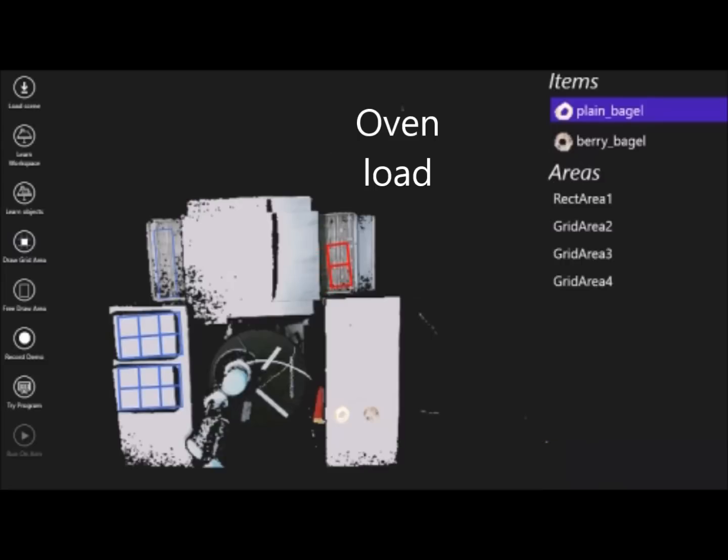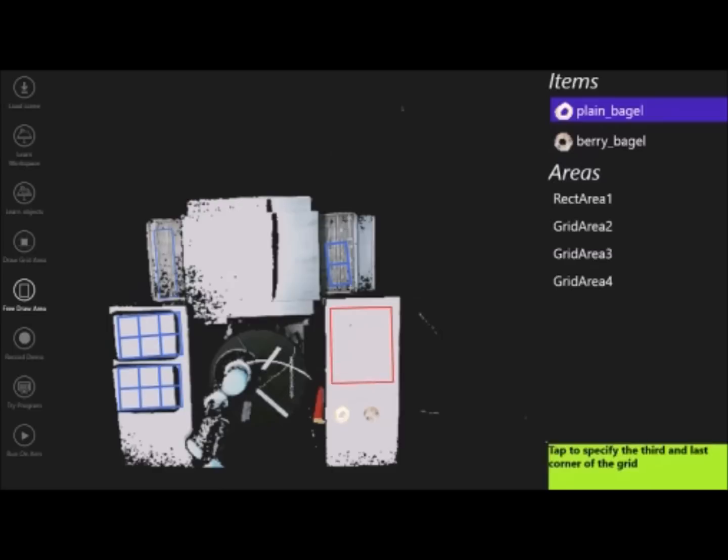Similarly, regions on the oven load side are drawn. The baker determined that only two bagels can fit at the input of the conveyor, and so drew a 1 by 2 grid.